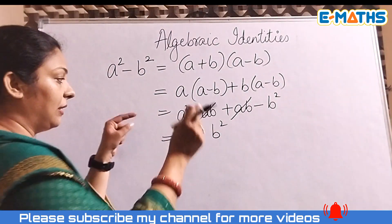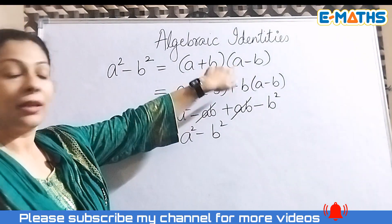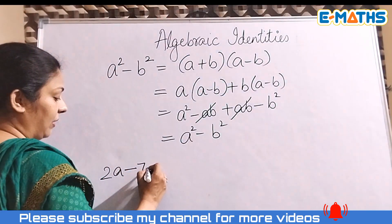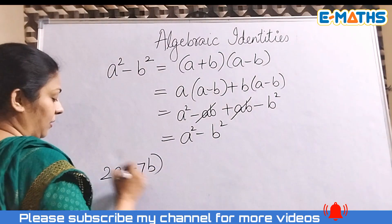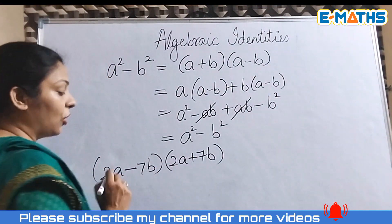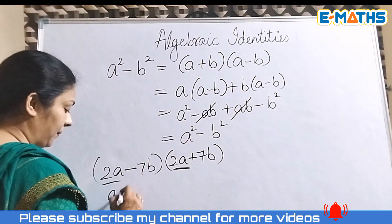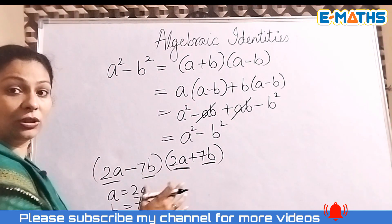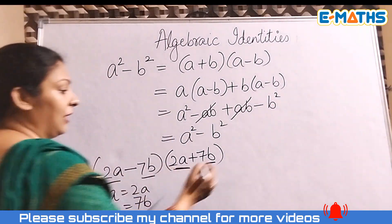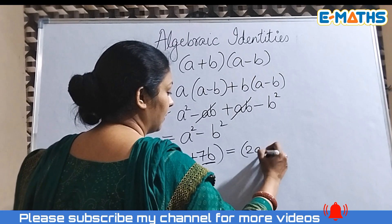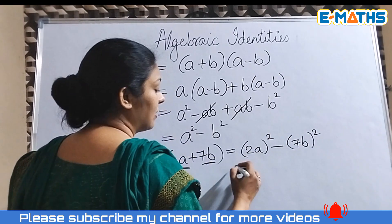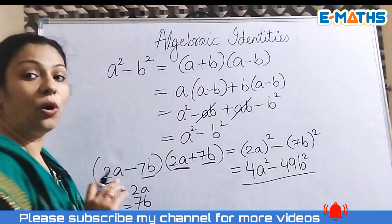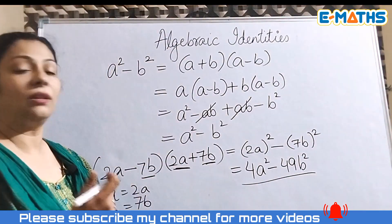For example, take (2a - 7b)(2a + 7b). Notice the values of a and b are the same in both brackets, but the signs are different, so we can apply the a²-b² identity. The result is (2a)² - (7b)² = 4a² - 49b².